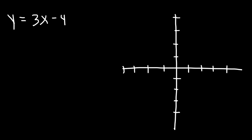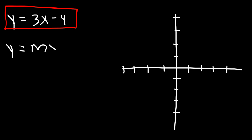What is the slope and y-intercept in this equation? Remember the slope-intercept formula: y equals mx plus b. The slope is m, which is the number in front of x, so the slope is 3. The y-intercept is b, which is the constant value at the end, and that's negative 4.